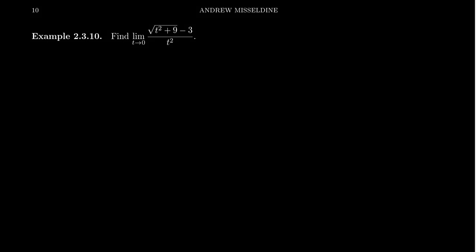In this video, I want to demonstrate how one can compute the limit of a difference quotient that involves a square root expression. We have the limit as t goes to zero of the square root of t squared plus nine minus three, over t squared.